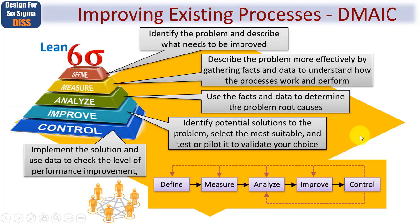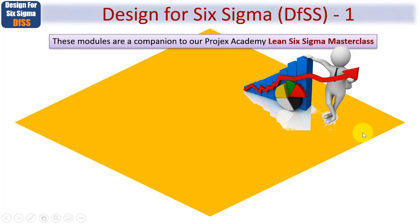So that's DMAIC, and if you want to learn to become a green belt or practitioner level, do check out our Lean Six Sigma Masterclass. So having stated that, let's now look at what is known as Design for Six Sigma — get used to the abbreviation DFSS. These six video modules are an overview, but act as a companion to our Projects Academy Lean Six Sigma Masterclass.